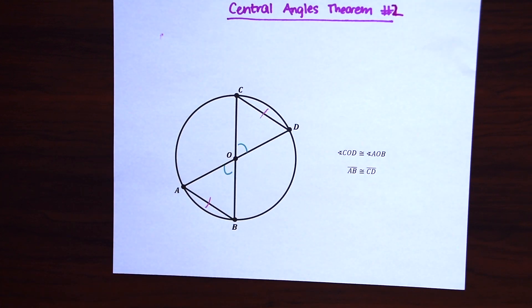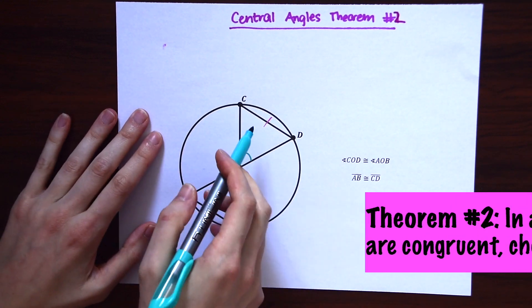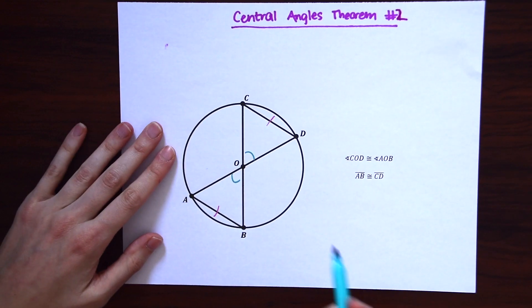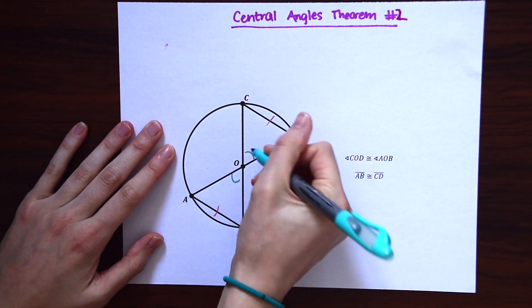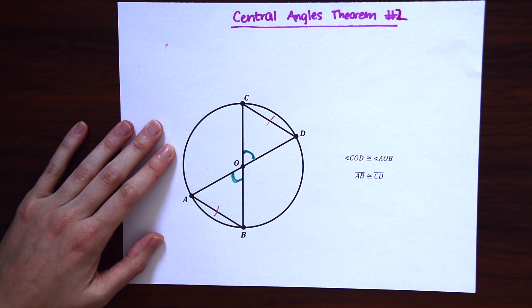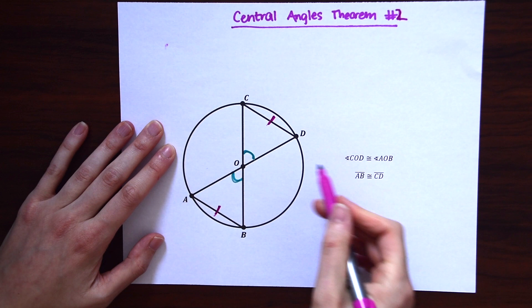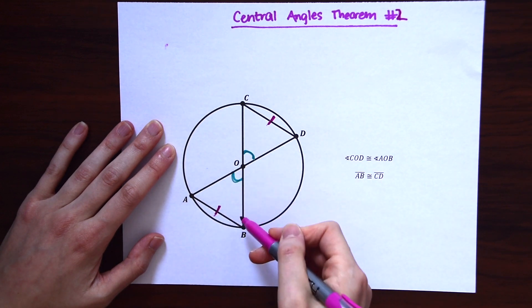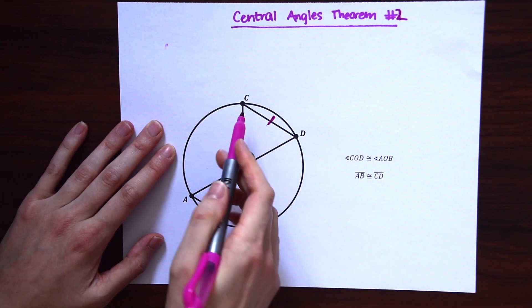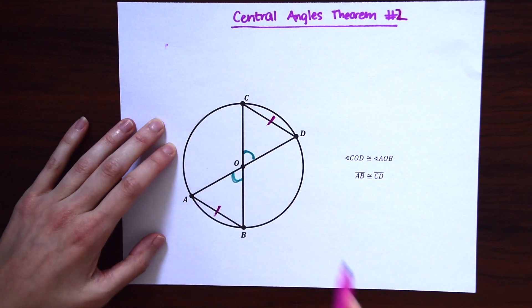So our next theorem, notice this time we have chords. So before we were saying that our arcs are congruent to each other if our angles are congruent to each other, this time we're saying if our angles are equal to each other, then our chords are also equal to each other. So that's all this says here is angle COD is congruent to AOB. Then we know that chord AB is congruent to chord CD.